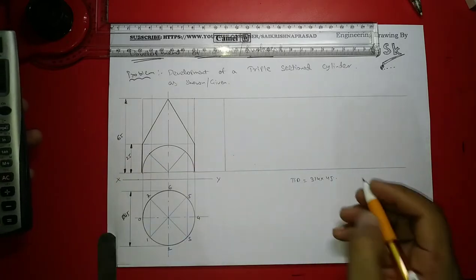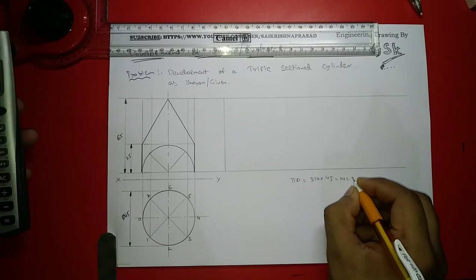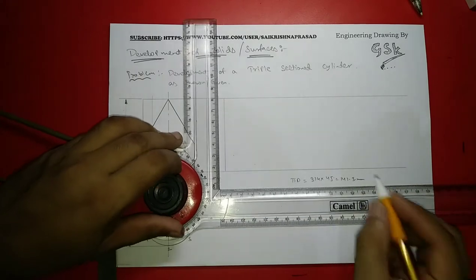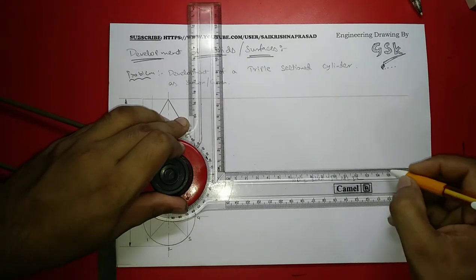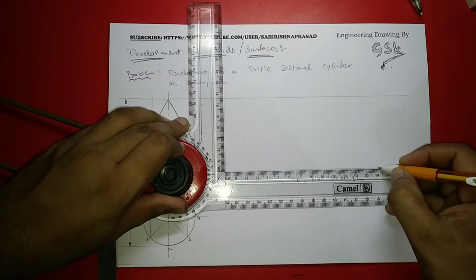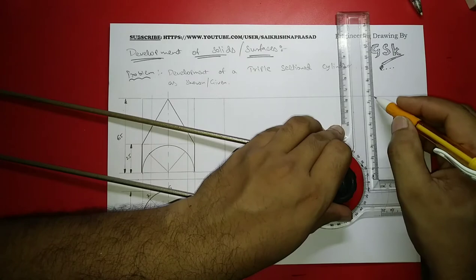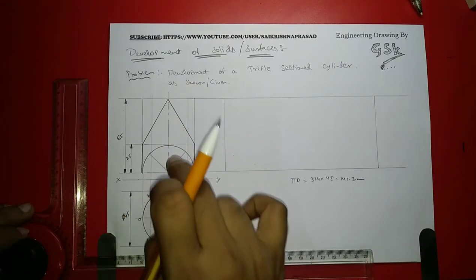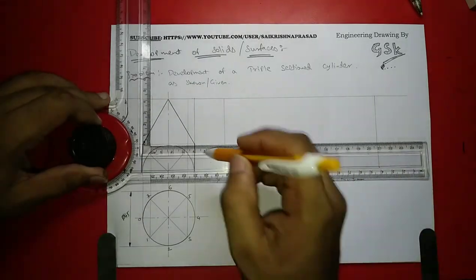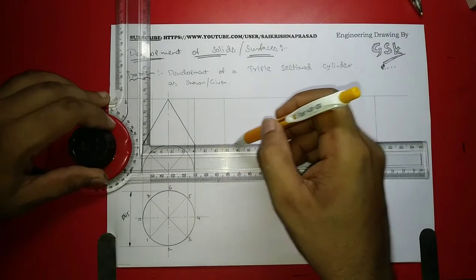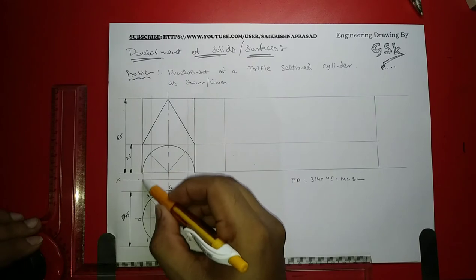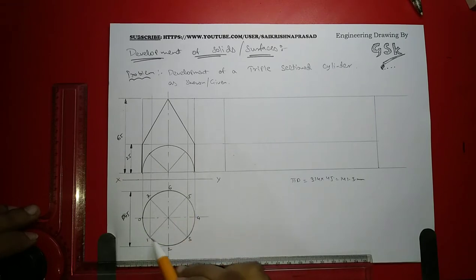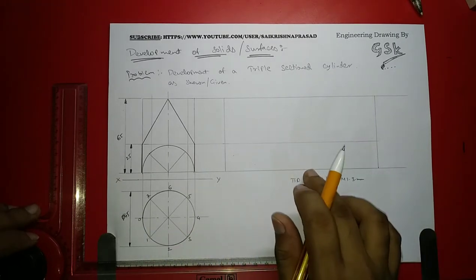This would be around 141.3mm. I'll be marking a line of 141.3mm over here. That's the total length if we open a normal cylinder, but now it is sectioned so we have to develop according to this. I'll draw a line from here to here because at this end, at zero, we are opening that. I'll divide this into 8 equal parts.